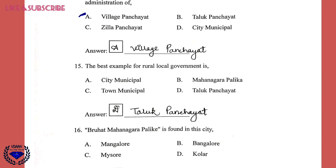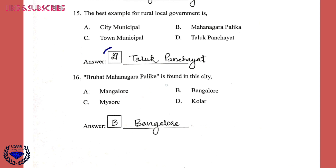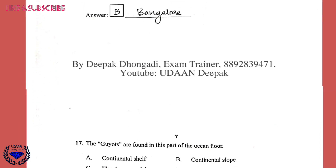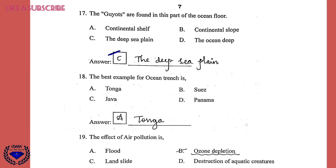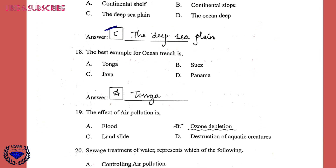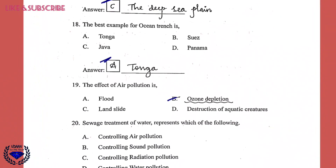Question 15: The best example for rural local government is option D, taluk panchayat. Question 16: Bruhat Mahanagara Palika is found in the city — the answer is option B, Bengaluru. Question 17: The guyots are found in this part of the ocean floor — option C is correct, the deep sea plain. Question 18: The best example for an ocean trench is option A, Tonga. Question 19: The effect of air pollution is option B — ozone depletion.